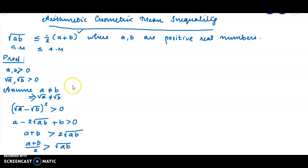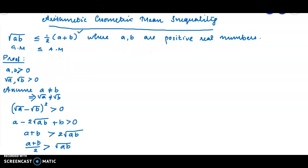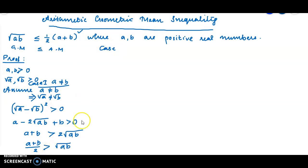If A and B are unequal, we get the strict inequality: root AB is strictly less than half of A plus B. This is Case 1, when A is not equal to B. In Case 1, we have the strict inequality: root AB less than (A+B)/2.